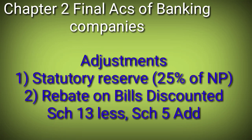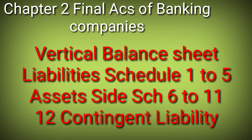Some adjustments to discuss: Net profit - 25% must be compulsorily transferred to Statutory Reserve. Number two is Rebate on Bills Discounted. These two adjustments are compulsory in any final accounts of a banking question. Other adjustments can also be asked.